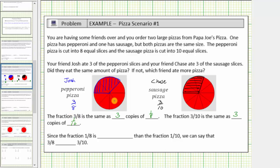So in terms of the pizza, we can say that Josh ate three pieces of pizza, where each piece is the size of one-eighth of the pizza. And because Chase ate three-tenths of the pizza, he ate three pieces, where each piece is the size of one-tenth of the pizza.